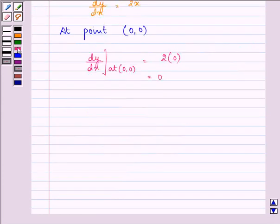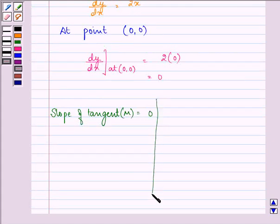That means slope of tangent which we take as m is equal to 0, and slope of normal which is minus 1 upon m will be equal to minus 1 upon 0.